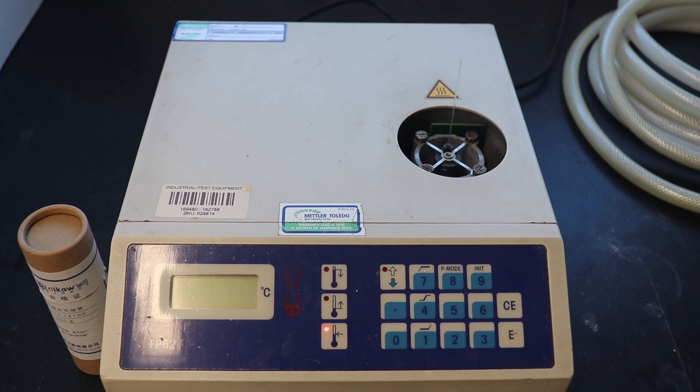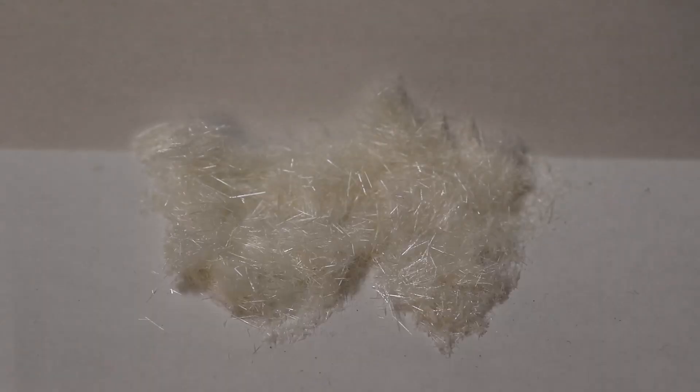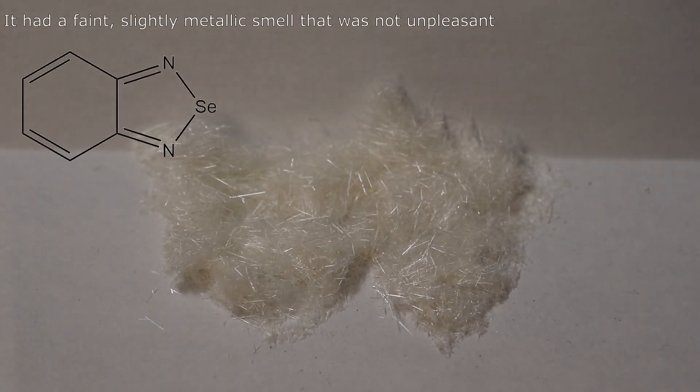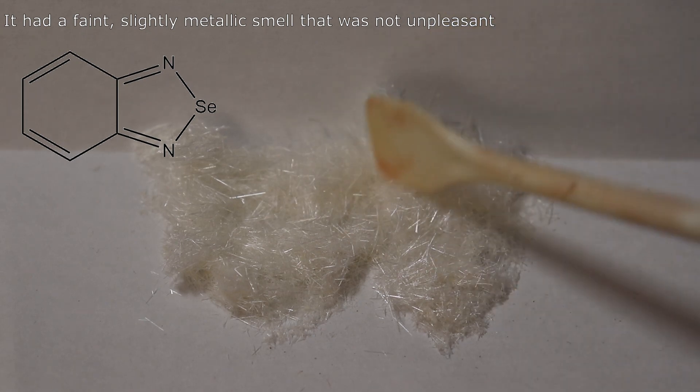The theoretical melting point is 73-74 degrees Celsius, and I got 73.7 degrees Celsius at a heating rate of 1 degree Celsius per minute. So we have in fact made our selenium-containing heterocycle.